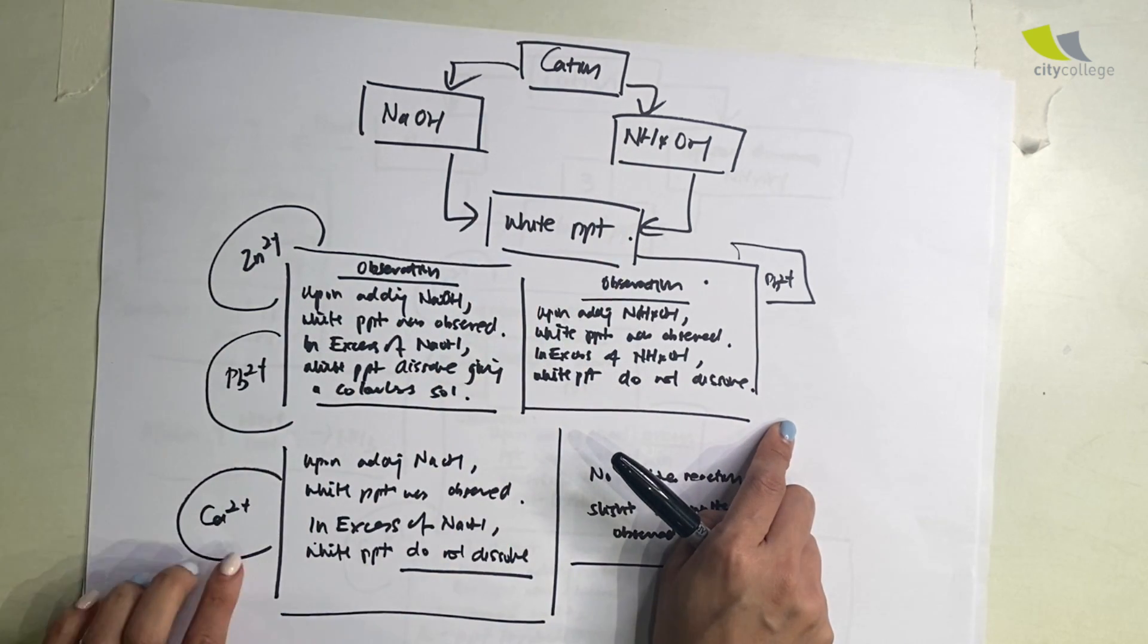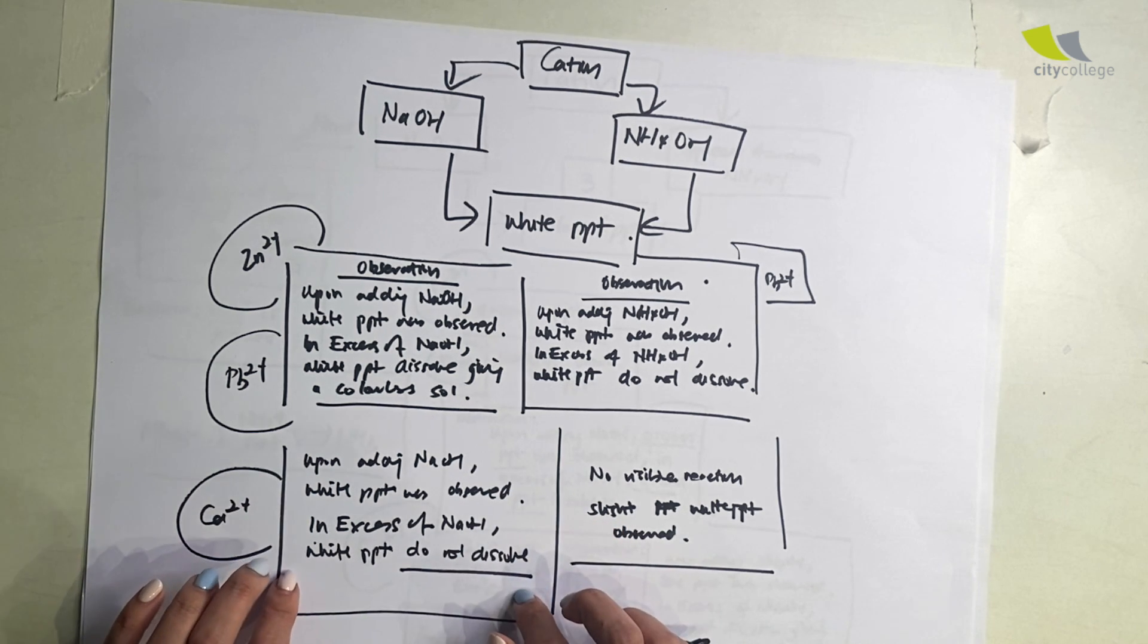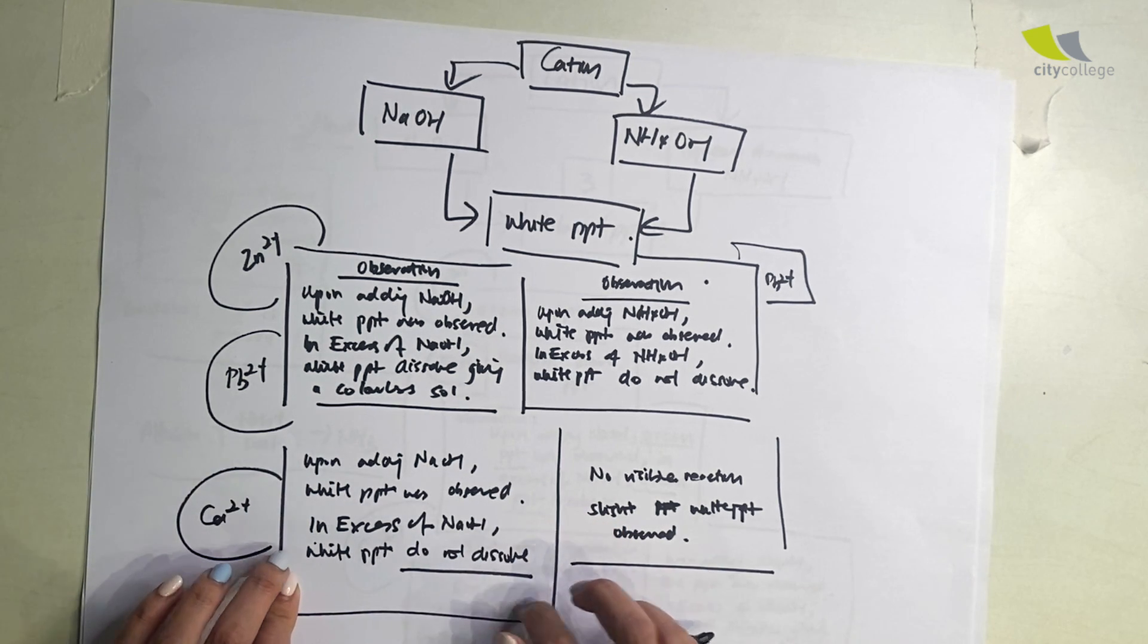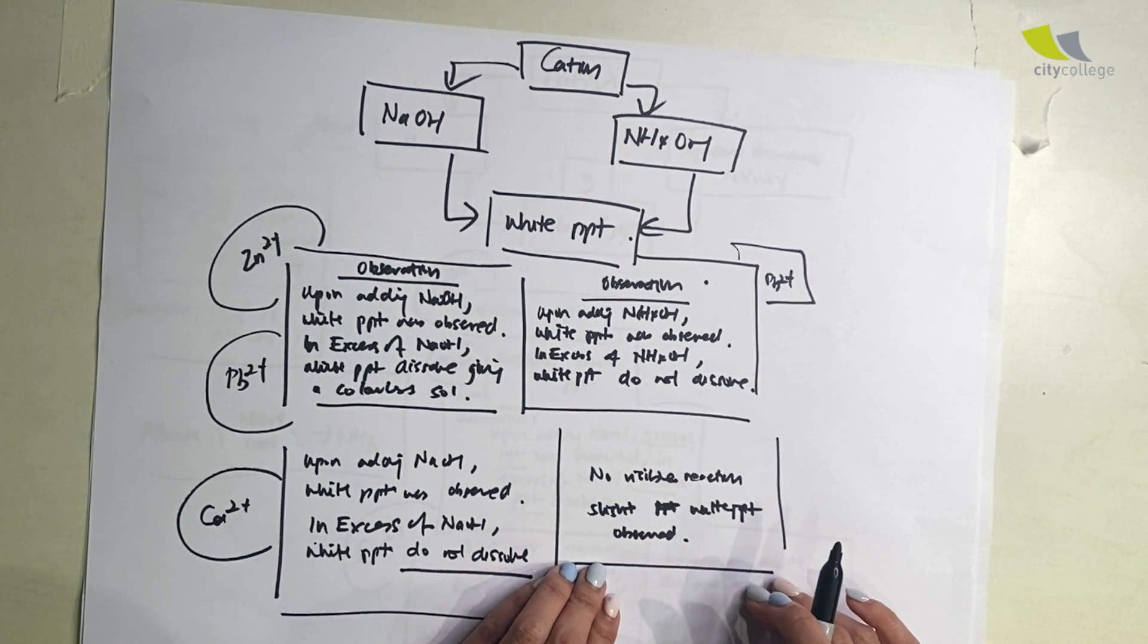Then we go on to Ca2+. Over here, they will give you white ppt, and the ppt do not dissolve in excess. And under NH4OH, there's no visible reaction or slight white ppt observed only. I hope you get this.